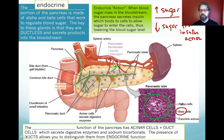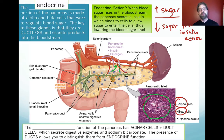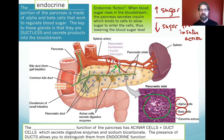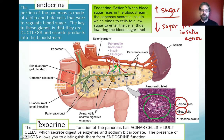The pancreatic alpha cells secrete glucagon when blood sugar is very low. Glucagon allows the release of glucose from glycogen stored in the liver, raising blood sugar levels. Both insulin and glucagon are homeostatic functions regulating blood sugar. The exocrine function of the pancreas involves acinar cells and duct cells secreting digestive enzymes and sodium bicarbonate through ducts into the small intestine — distinguished from endocrine function by the presence of these ducts.